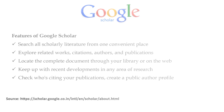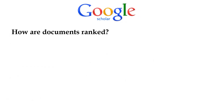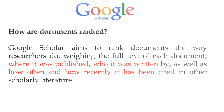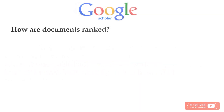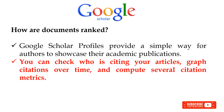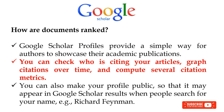Let us see how documents are ranked in Google Scholar. Google Scholar aims to rank documents the way researchers do, weighing the full text of each document, where it was published, who it was written by, as well as how often and how recently it has been cited in other scholarly literature. Google Scholar profiles provide a simple way for authors to showcase their academic publications. You can check who is citing your articles, graph citations over time, and compute several citation metrics. You can also make your profile public so that it may appear in Google Scholar results when people search for your name.